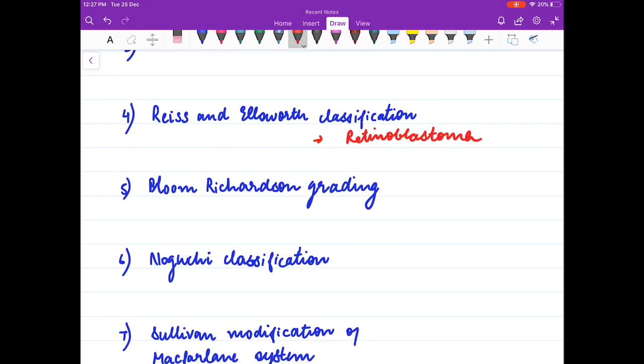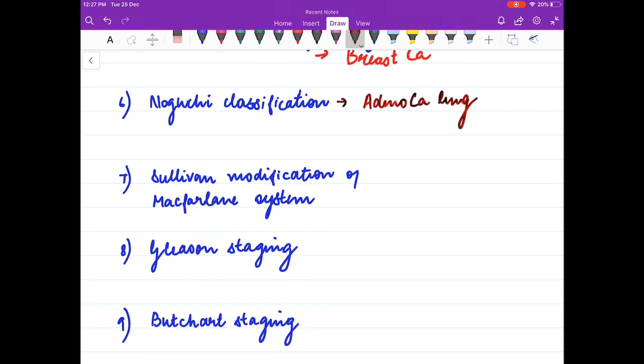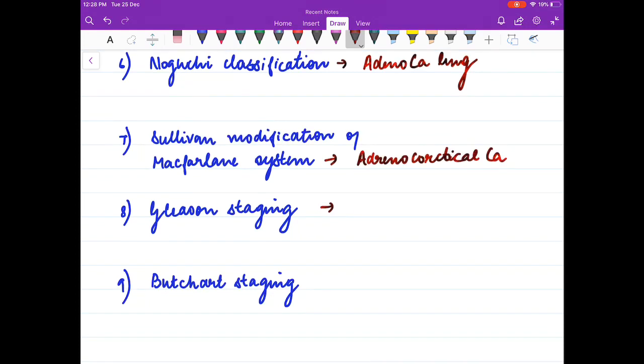Bloom Richardson grading is used for breast cancer. Nogoochi classification is used for adenocarcinoma lung. Sulevan modification of Makparlana system is used for adrenocortical carcinoma.